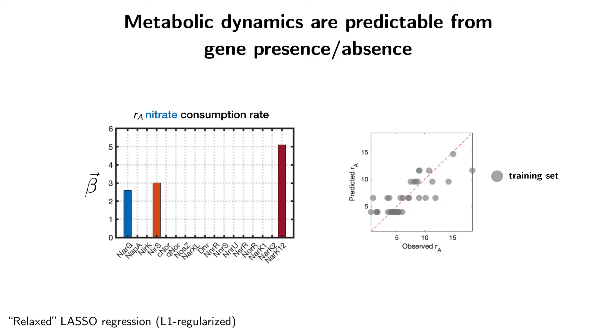Remarkably, we find that this approach actually works. We find that these parameters which encode the metabolic dynamics can actually be predicted from denitrification gene presence and absence. Here I'm showing the example of the nitrate consumption rate RA prediction. The bar chart is showing the coefficient vector beta.